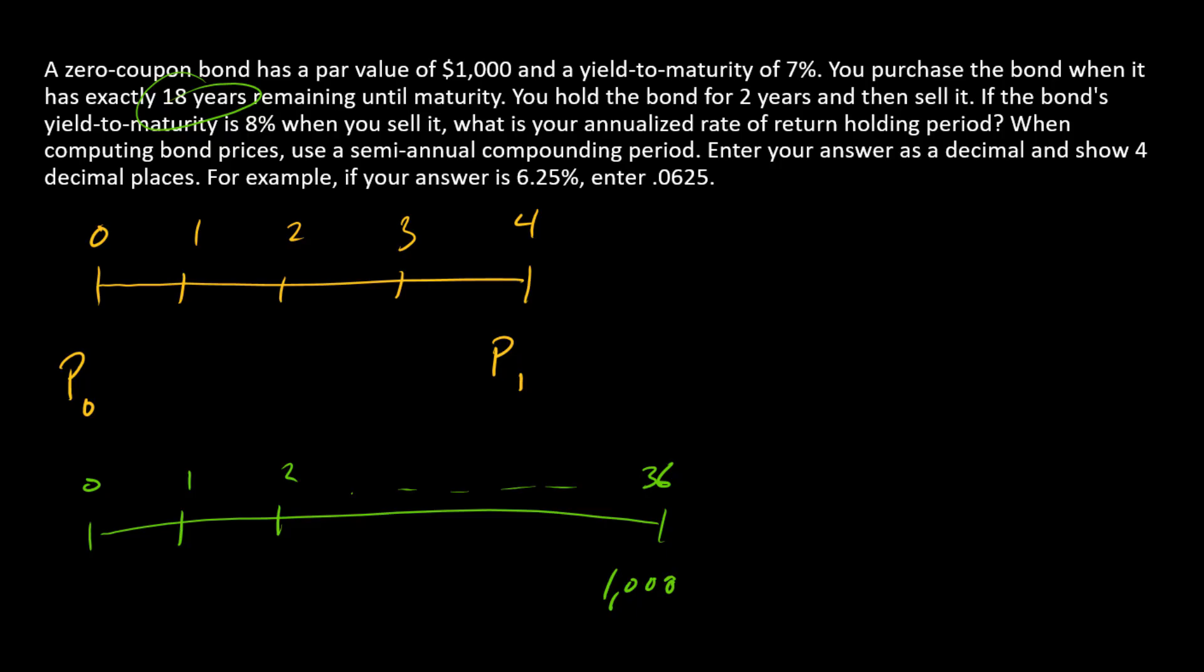At maturity, P0 is the present value of that $1,000 at time zero. So P0 equals $1,000 discounted 36 periods at a discount rate of what? Initial yield to maturity: 7%, so the initial discount rate is 3.5%, a semi-annual discount rate.